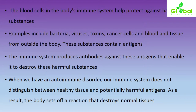These harmful substances — bacteria, viruses, toxins, cancerous cells, and blood and tissue from outside the body — contain specific antigens. The immune system produces antibodies against these antigens, enabling it to destroy these harmful substances. Based on normal autoimmune mechanisms, our body's immune system will produce antibodies against these foreign bodies containing antigens, thereby activating to destroy them.